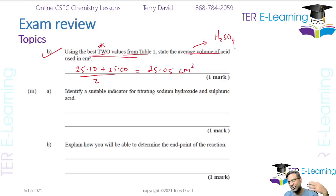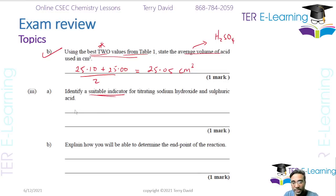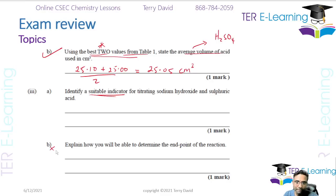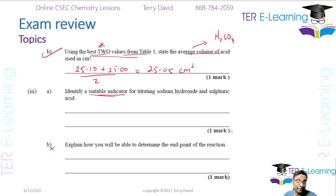Identify a suitable indicator: you can use screened methyl orange, methyl orange, or phenolphthalein. To determine the end point: when you put the indicator in the sodium hydroxide it will be a particular color. When you keep adding acid, the color will change at the neutralization point because there's slightly more acid in the mixture.